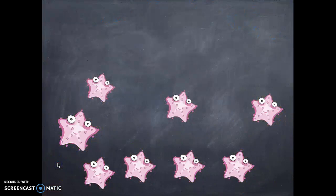Let me get rid of the background so you can see them clearly. There we go. Who has an idea of the best way to count these starfish so I make sure I count all of them? I like that dot-to-dot plan. That's where I can just start at one and draw lines as I count them, right?